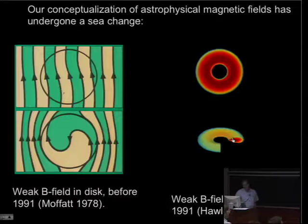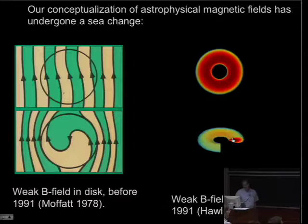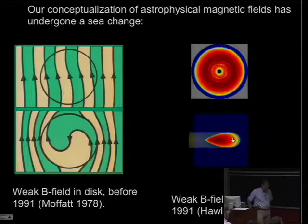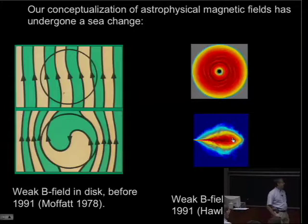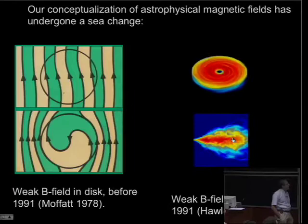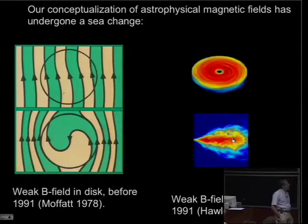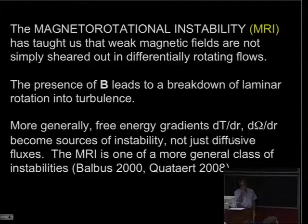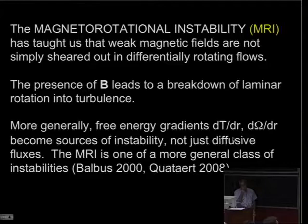That is by way of contrast of what really happens when you put a weak magnetic field in a disk. These are movies that John Hawley made back around the turn of the century. We understand now that the effects of even weak magnetic fields are dynamically of tremendous importance. The presence of a magnetic field leads to a breakdown of laminar rotation into turbulence, something which may not be possible otherwise, although there are issues that remain to be settled.